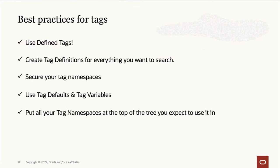Tagging best practices: use defined tags for features like cost tracking and bulk edits; create tag definitions for everything you want to search on; secure your tag namespaces by creating at least two - one for everyone and one restricted for cost tracking; use tag defaults to automatically tag all resources in a compartment; and place tag namespaces at the top of the compartment tree where you expect to use them.